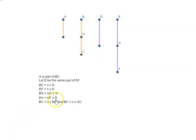Now this tells us BC is equal to n times BG. Because remember, we have already seen that BC is equal to n times A and BG is equal to A. Similarly, GC is equal to A.